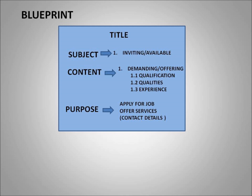The blueprint is divided into three categories: subject, content, and purpose — but we don't write them separately; it is a short composition that continues from start to end. Subject means the purpose for which we are writing the advertisement — inviting candidates (situation vacant) or declaring availability (situation wanted). Content includes the company's demands: candidate's qualification, qualities, and experience. In situation wanted, the candidate offers their own qualifications and experience. Purpose is the company inviting candidates to apply, or the individual offering services, with contact details provided.